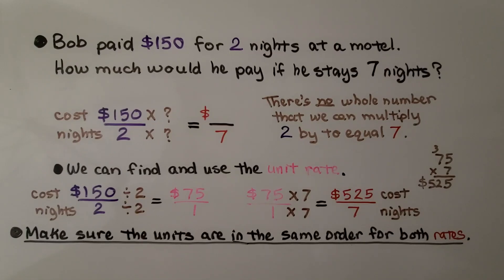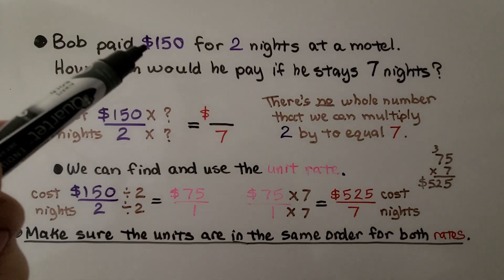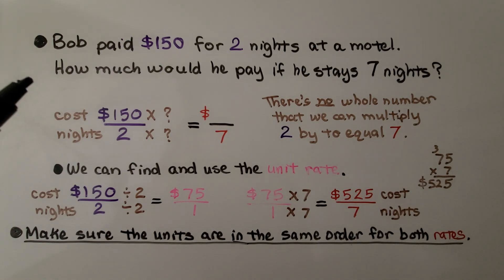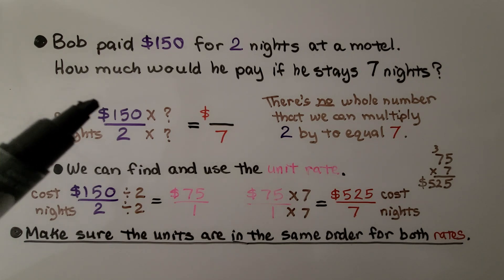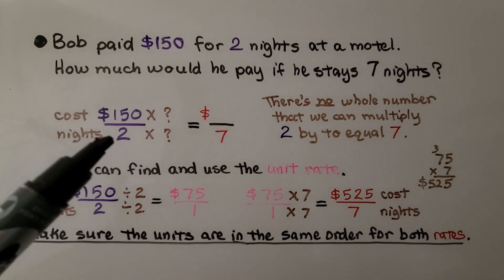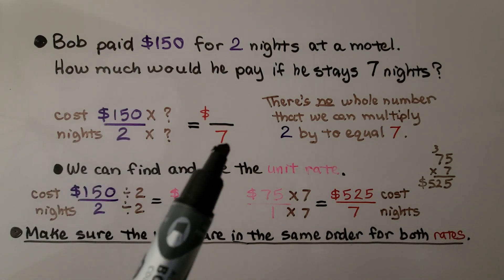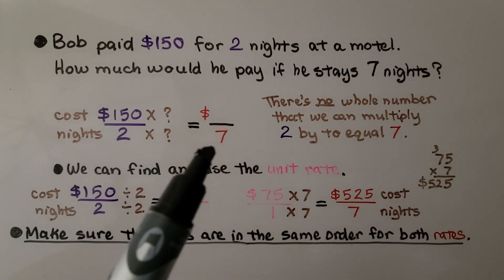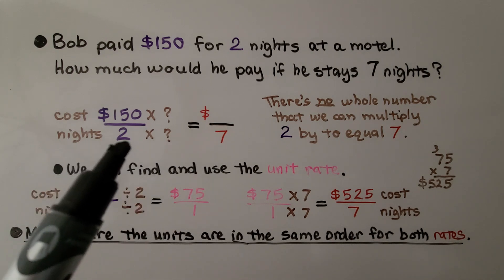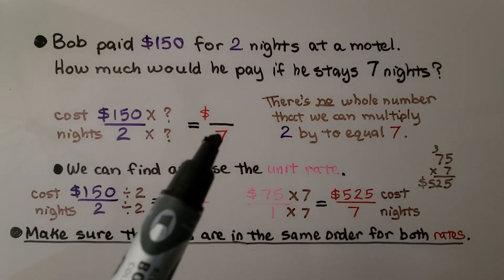Let's try another quick one. Bob paid $150 for 2 nights at a motel. How much would he pay if he stays 7 nights? We write our proportion. The cost is $150 for 2 nights. We think, what can we multiply 2 by to equal 7? There's no whole number that we can multiply 2 by to equal 7.